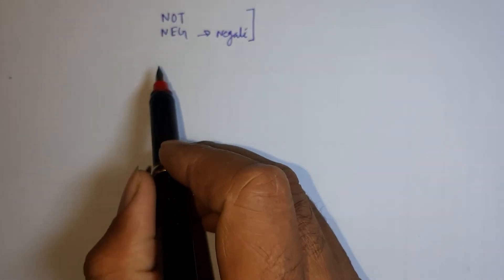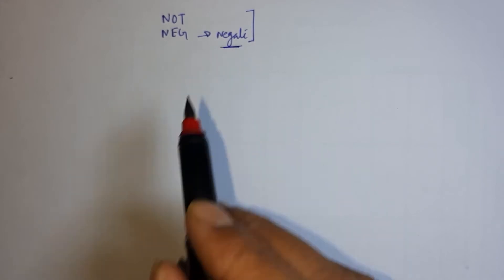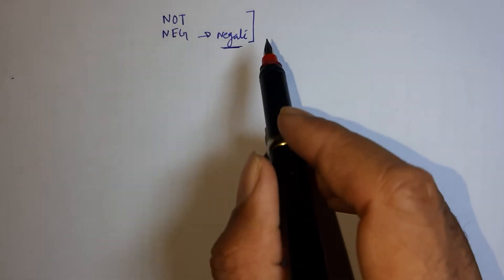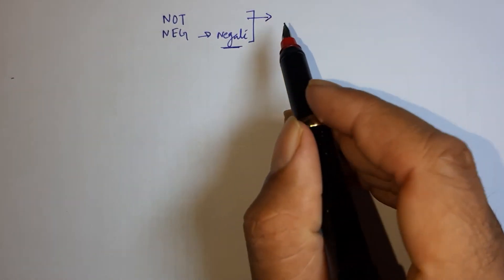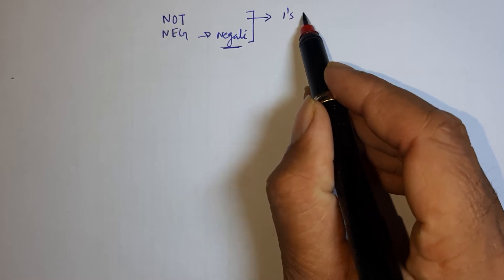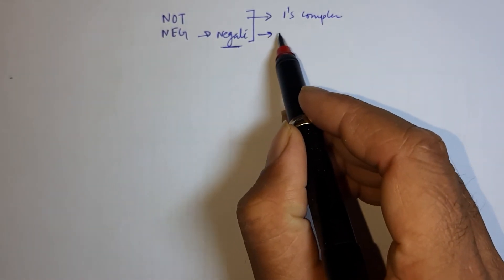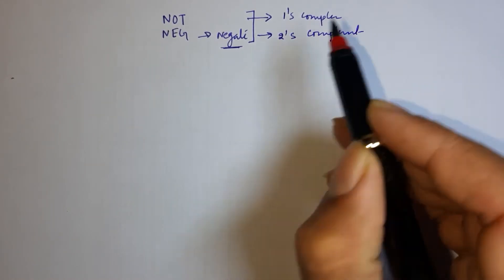First one is NOT, second is NEG, sometimes called negate. So basically, what is the use of these instructions? NOT instruction is used to find one's complement and NEG is used to find two's complement of any number.